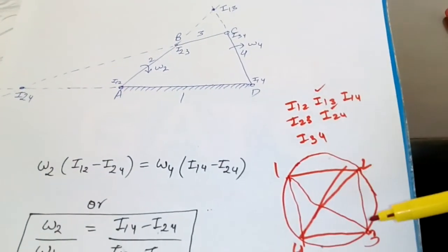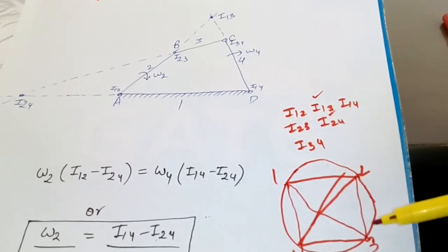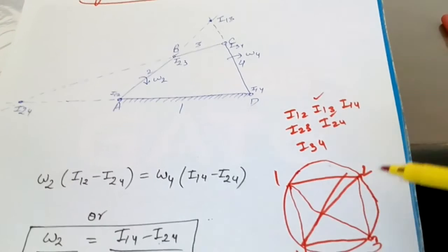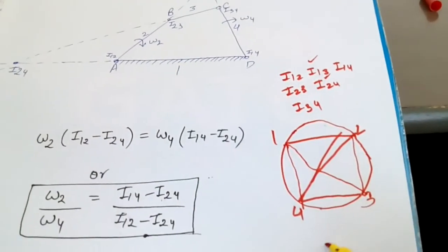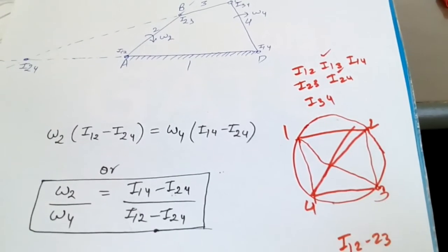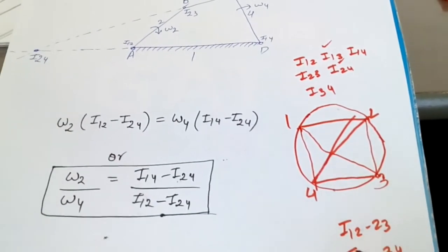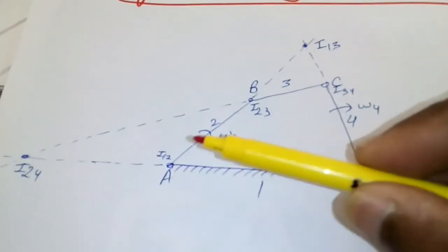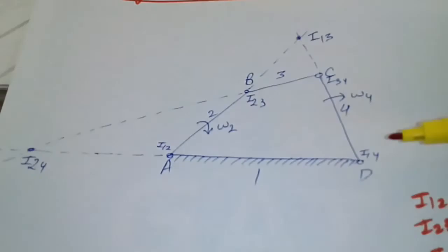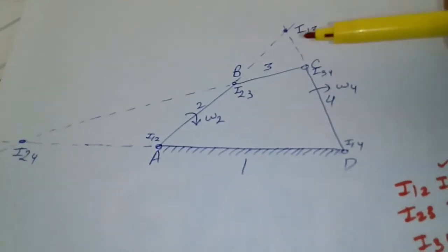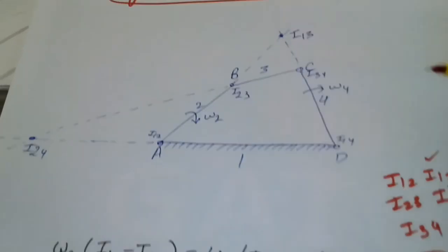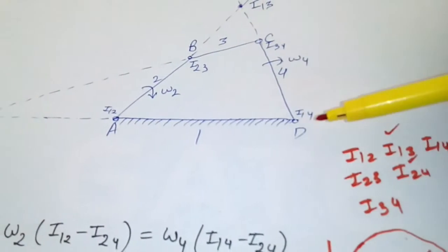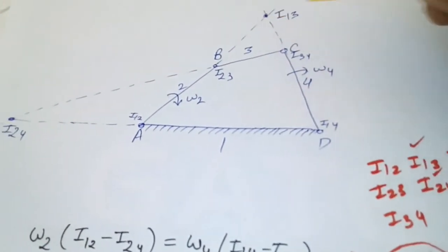To find i13: you can reach 1 to 3 by going 1→2→3 or 1→4→3. So i13 lies at the intersection of the line through i12 and i23 extended, and the line through i14 and i34 extended. Wherever these two lines intersect is the point i13.